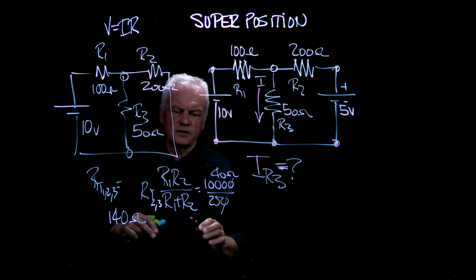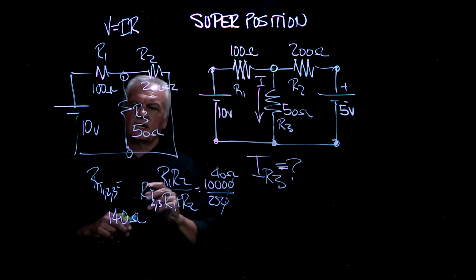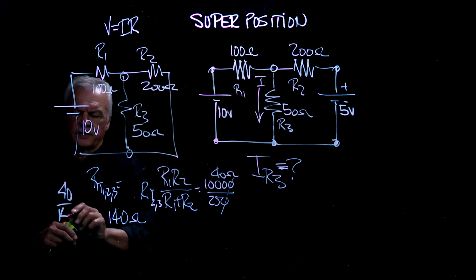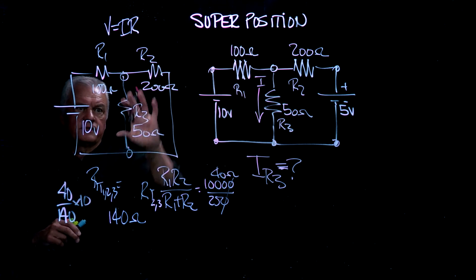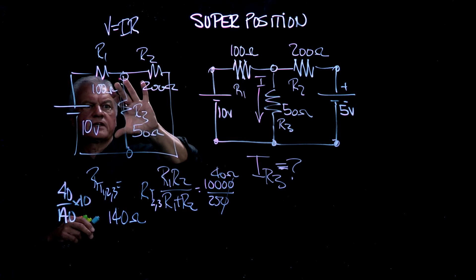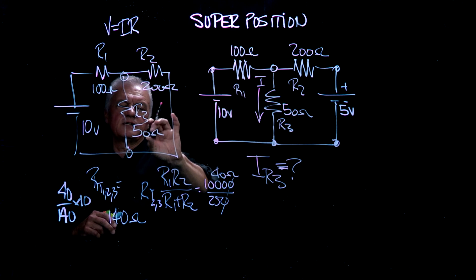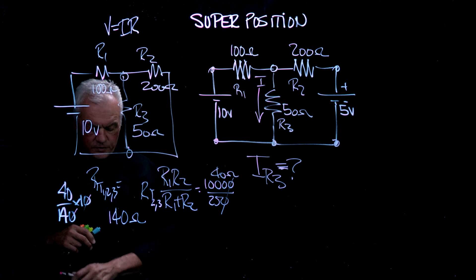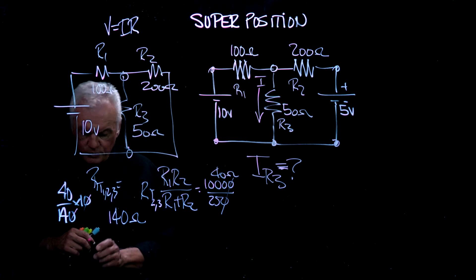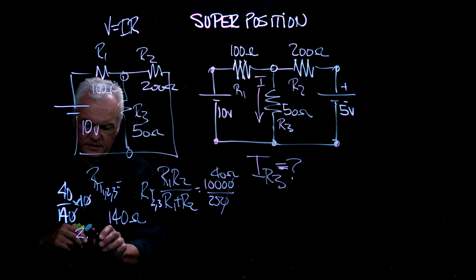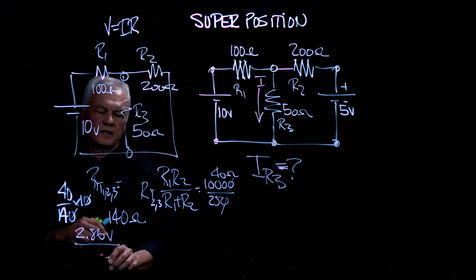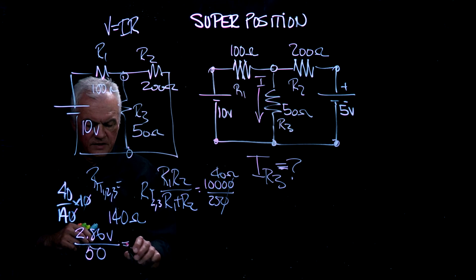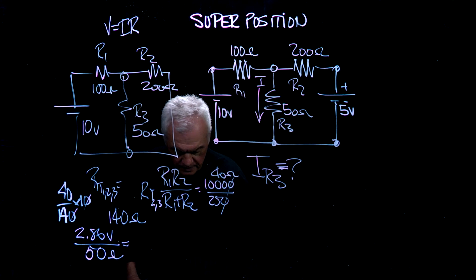I'm going to have 40 over 140 times 10 to figure out what the voltage is over here. Once I've got the voltage over here, I can just divide 50 into it and I'll have the current. In this case here, I've got 14 into 40, what is that, 2.86 volts? I think so. So I would have 2.86 volts across 50 ohms, and that will give me my current.